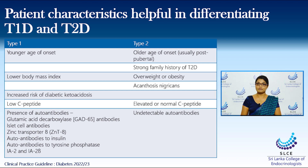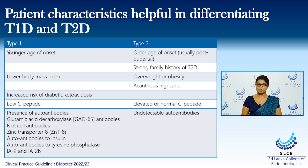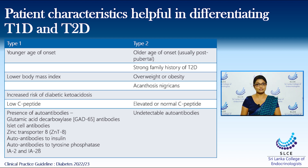Type 2 patients also tend to have features of insulin resistance such as acanthosis nigricans. Apart from that, patients with type 1 have an increased risk of developing diabetic ketoacidosis, whereas patients with type 2 have no risk of developing diabetic ketoacidosis. Apart from these clinical features, biochemical evaluations too will help in differentiating these two groups. Patients with type 1 will have low C-peptide levels, whereas patients with type 2 will have elevated or normal levels of C-peptide.